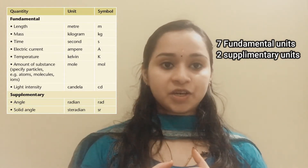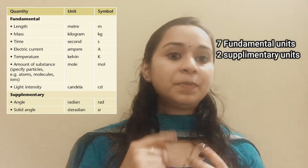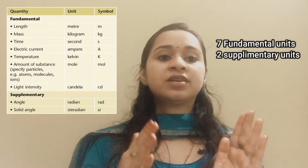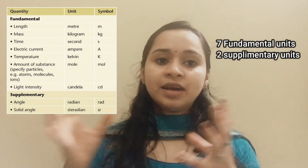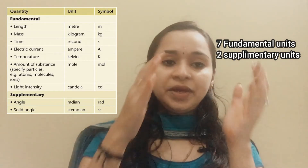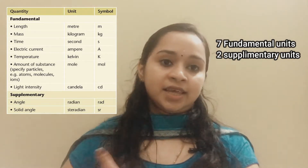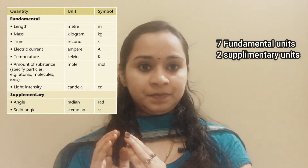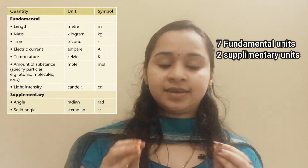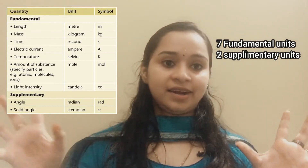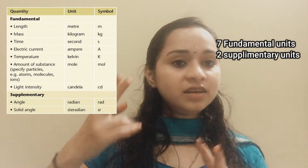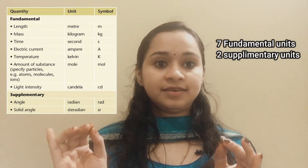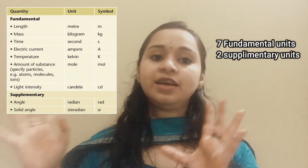These are the seven fundamental units. There are also two supplementary units. The first supplementary unit is the plane angle, whose unit is radian, with symbol rad. The second is the solid angle, whose unit is steradian, with symbol sr.